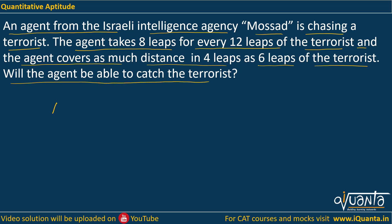So we have an agent and a terrorist. We have been given that the agent takes 8 leaps for every 12 leaps of the terrorist. That means if the agent is taking 8 leaps in some time, in the same time the terrorist is taking 12 leaps. So let me assume that in 1 second, if the agent is taking 8 leaps, then the terrorist will be taking 12 leaps.